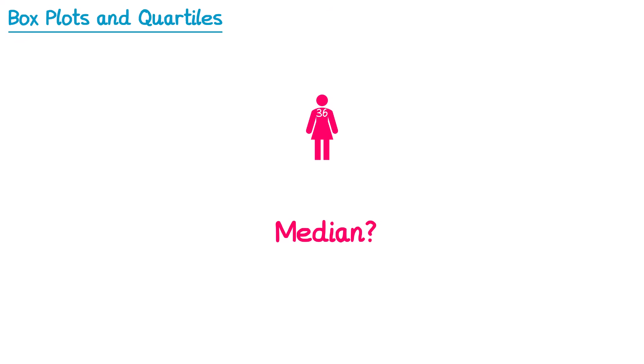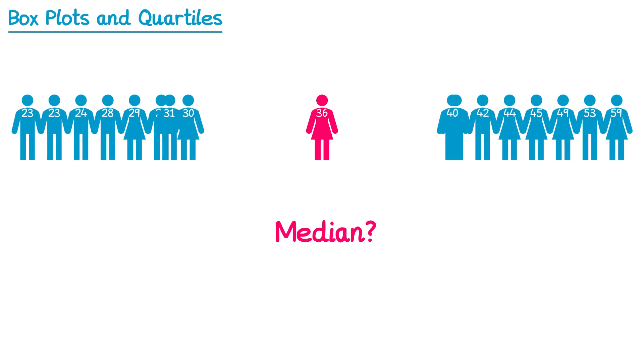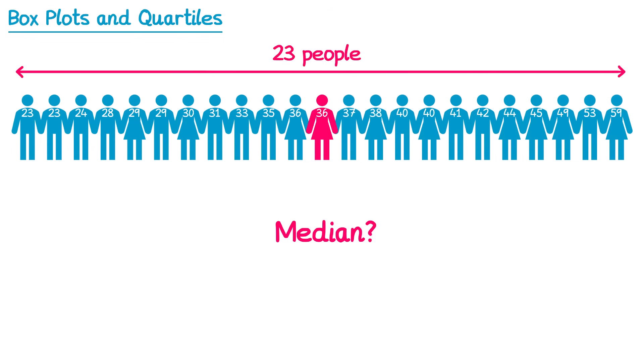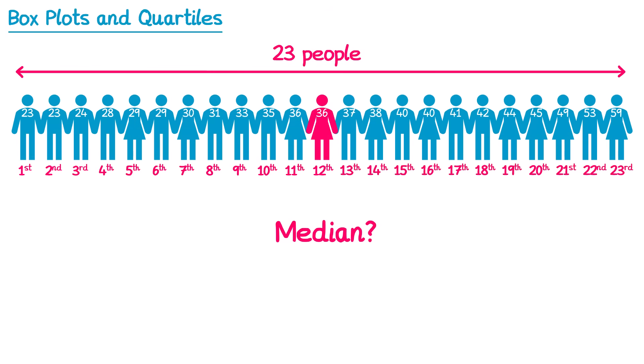This method of finding the middle value is really easy to understand, but sometimes it's not the most practical. Let's bring everybody back in. If you counted up everybody in this list you'd see that there were 23 people. Let's assign a position to everybody in the line. So the person on the left is in the first position, the next person is in the second position, and then we carry on third, fourth and so on until we hit the median. For this line you can see the median person is in the twelfth position, and if we continue to label all of the people it goes all the way up to the 23rd position.